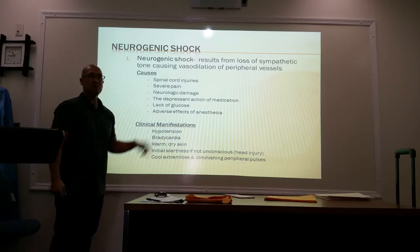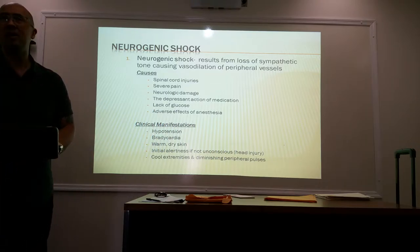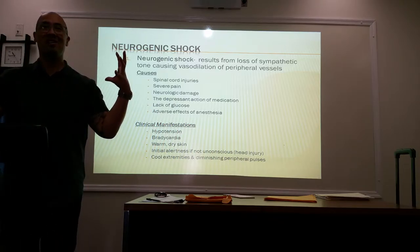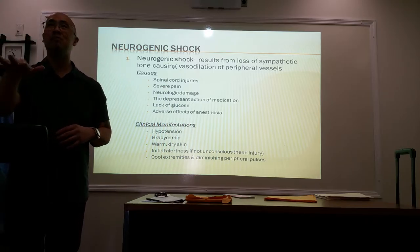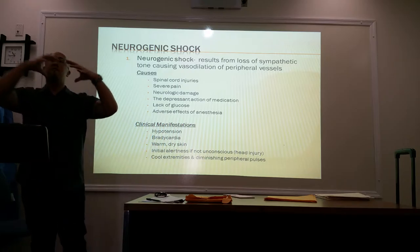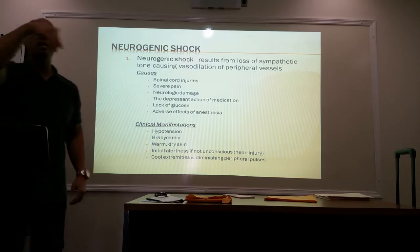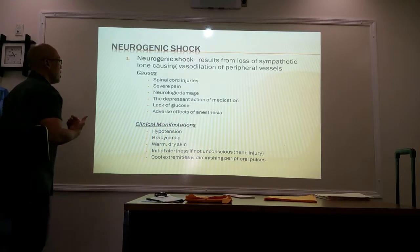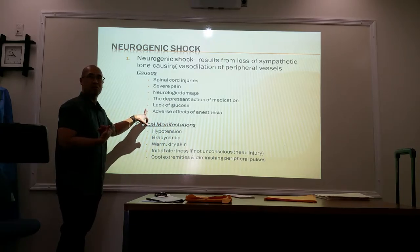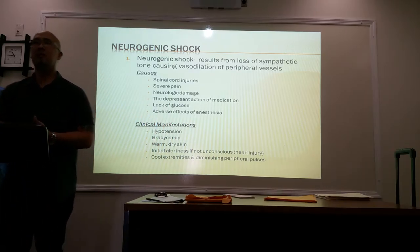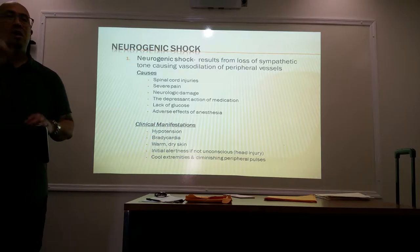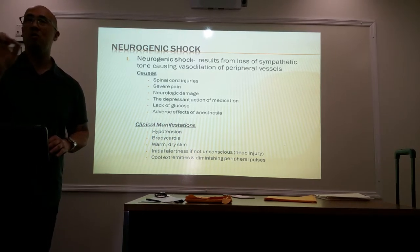Severe pain can also cause neurogenic shock. When someone faints from severe pain, their vessels vasodilate — blood isn't being pumped to the brain, causing them to faint. The same thing happens here: severe pain causes vasodilation, preventing blood from returning to the heart. Other causes include neurological damage, the depressive action of medication, and lack of glucose. Someone who is hypoglycemic — their brain not only needs oxygen but also needs blood sugar.